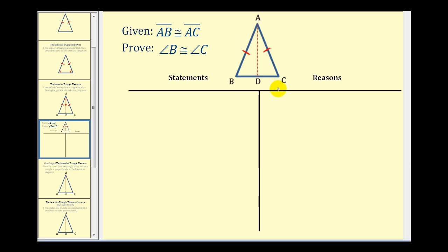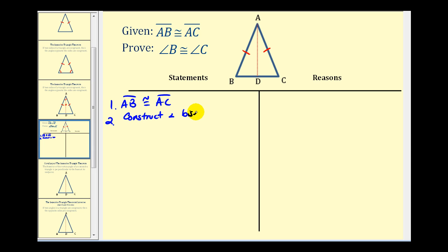We'll start by stating the given. We know segment AB is congruent to side AC, so we do have an isosceles triangle — reason: given. Step two, we'll bisect angle A by constructing an angle bisector — reason: every angle has one angle bisector.